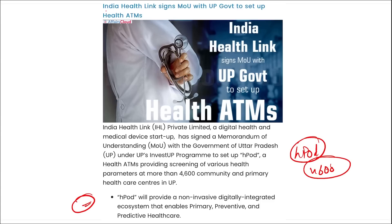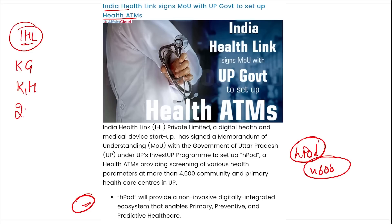India Health Link has tied up with the UP government for health ATMs. A health ATM is a touchscreen hardware designed for managing health-related information, allowing individuals to access their personal health information. IHL director is Krishan Goyal, headquartered in Karnal, Haryana, established in 2013. Uttar Pradesh Chief Minister is Yogi Adityanath, and Jewar Airport is also being built in Uttar Pradesh.